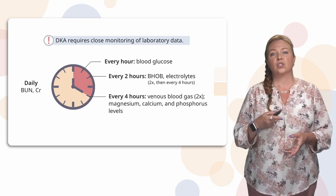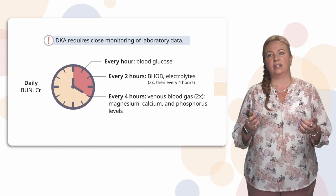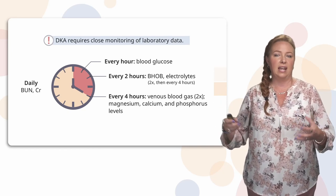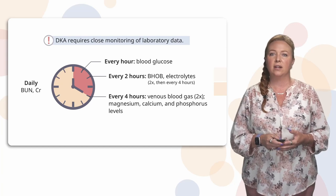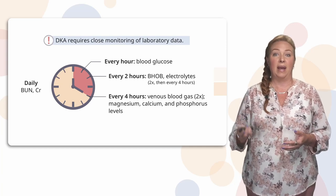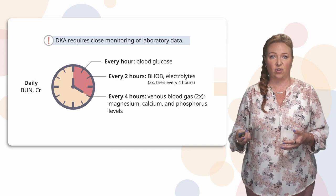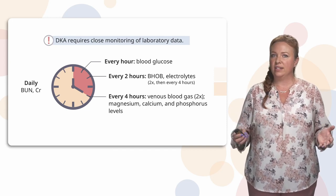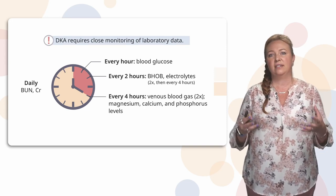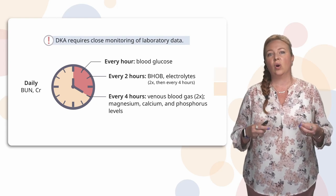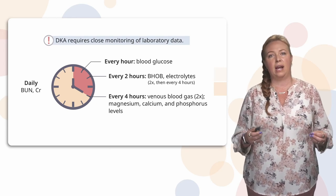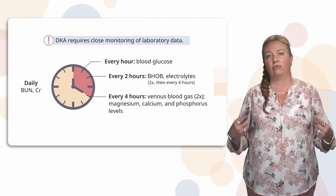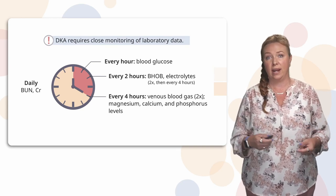Every four hours, we check the venous blood gas at least twice, which gives us an indication of how bad the DKA is. We're also checking magnesium, calcium, and phosphorus. As you can see, this is very time-intensive — you are sending multiple laboratory specimens off at a really frequent rate.